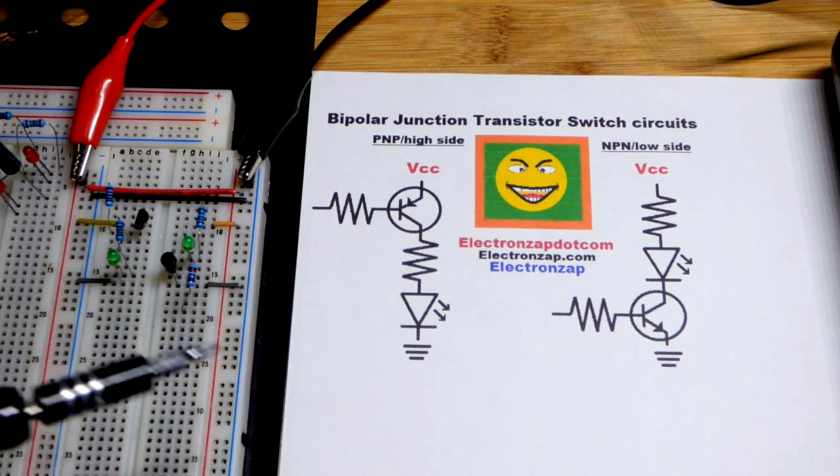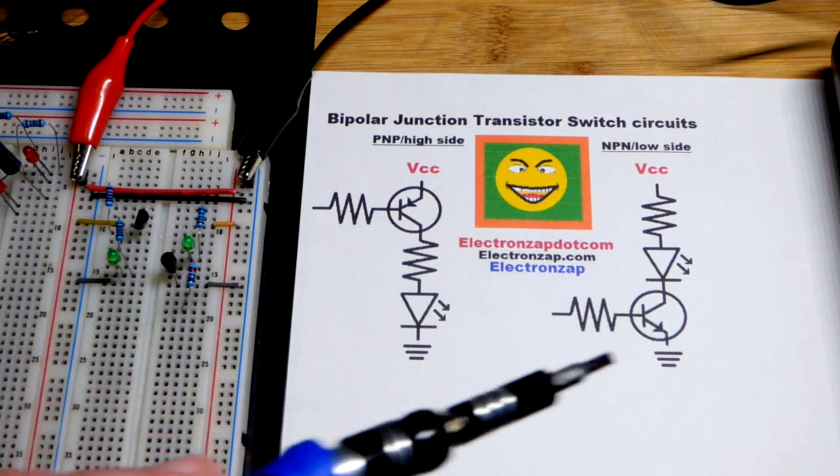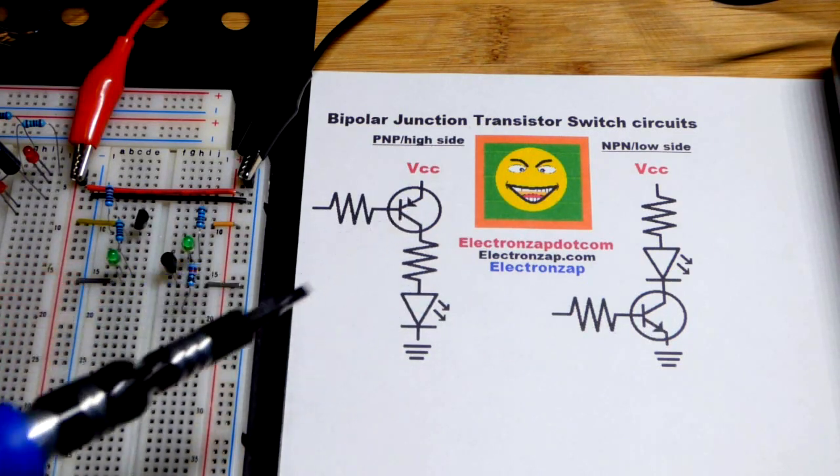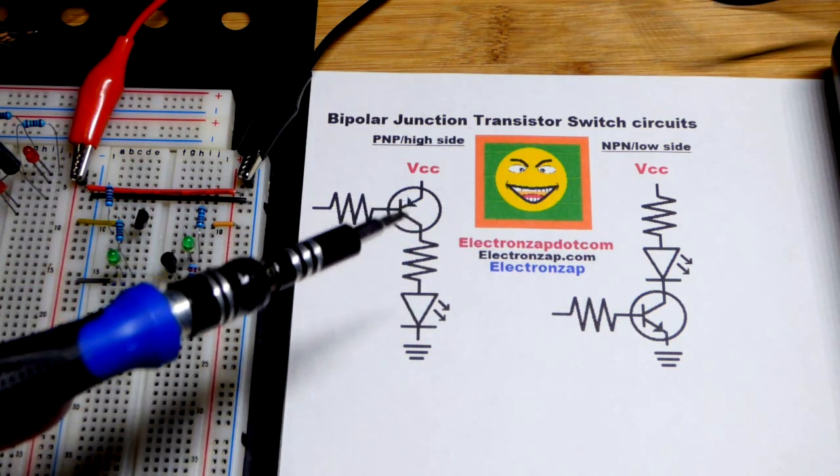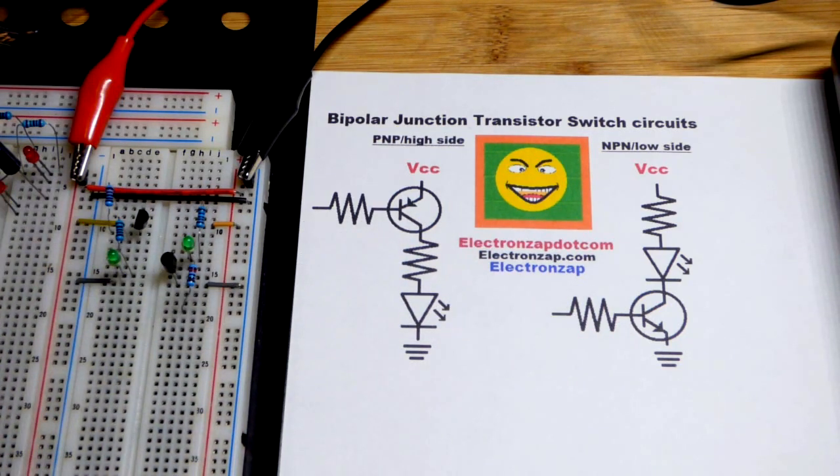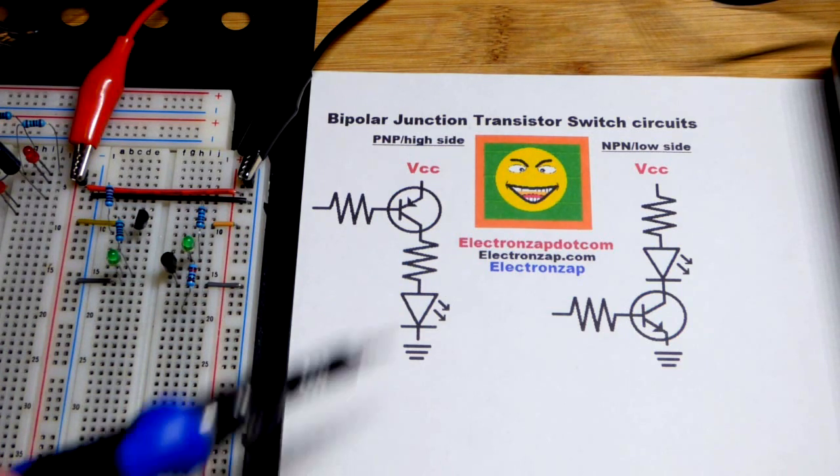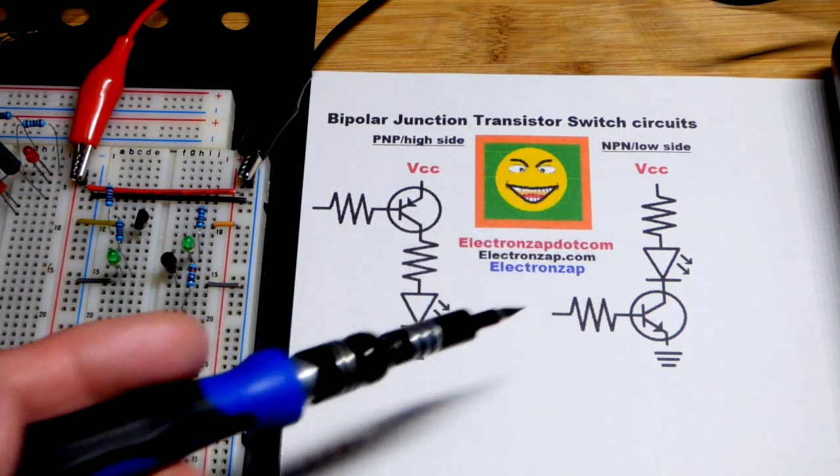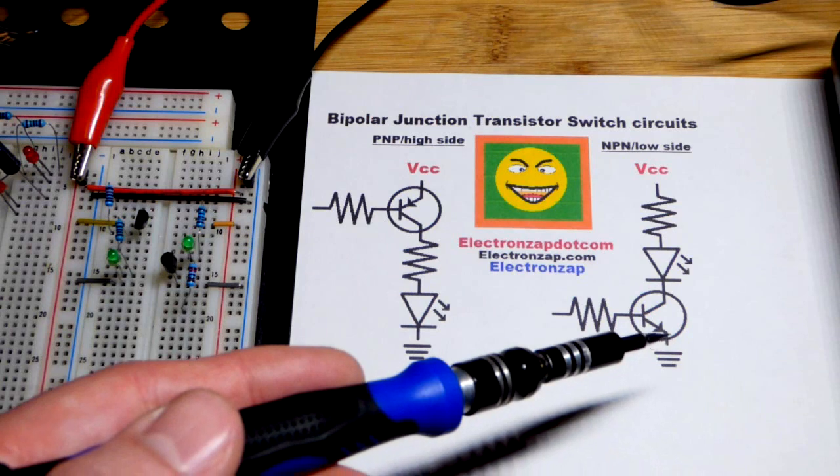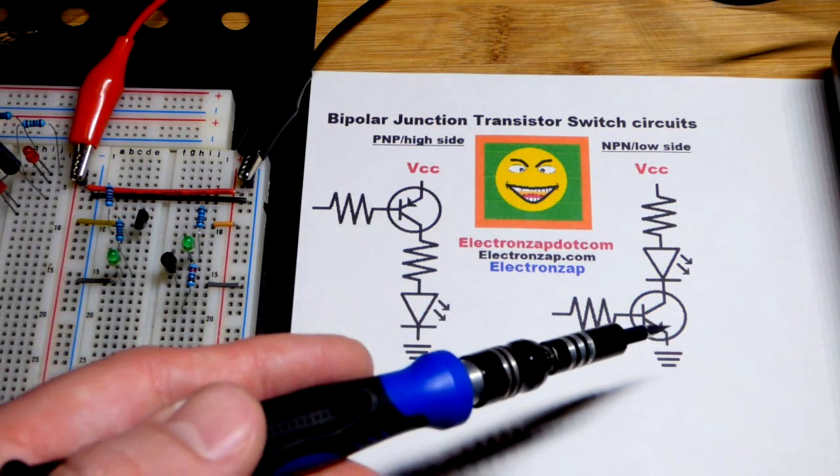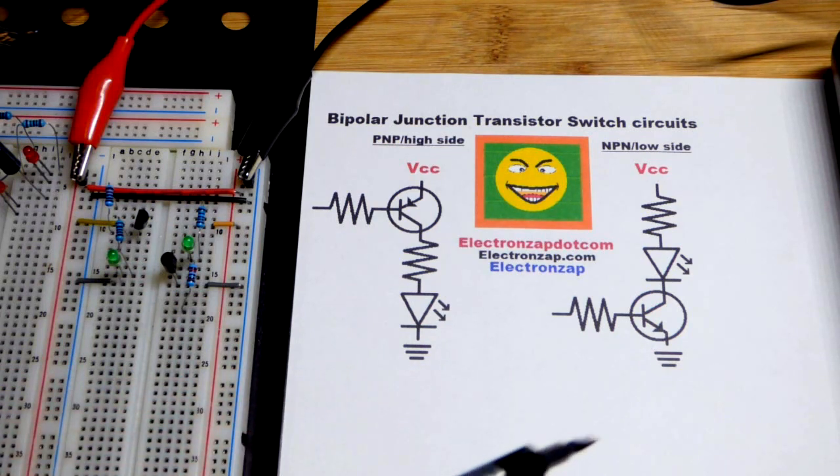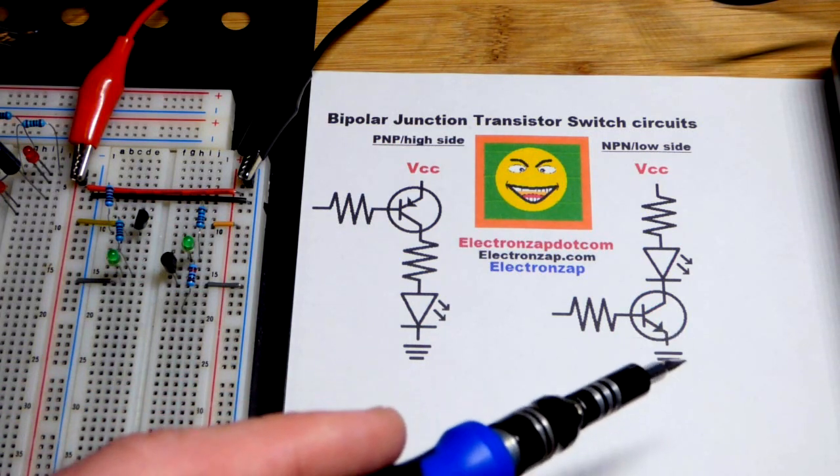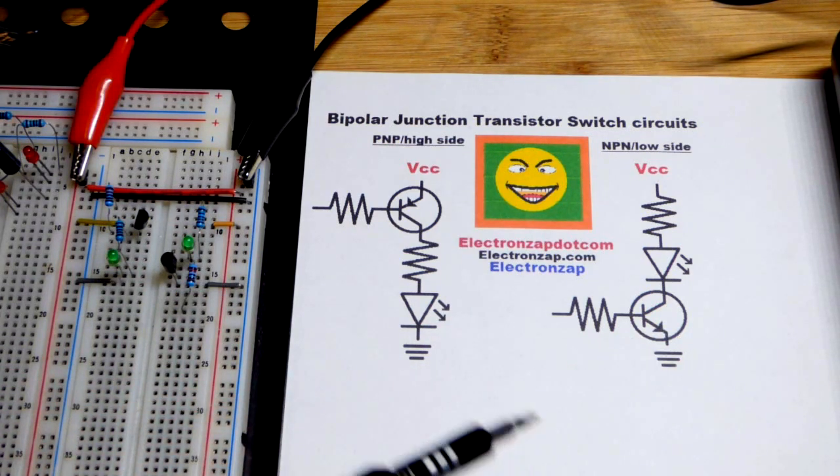Unfortunately, we have an NPN bipolar junction transistor and a PNP bipolar junction transistor. They work on opposite voltages. You can't just stick them wherever you want within a circuit if you want a switch circuit. The emitter needs to be directly to the power supply, to the negative supply or zero volts ground, for the NPN bipolar junction transistor.